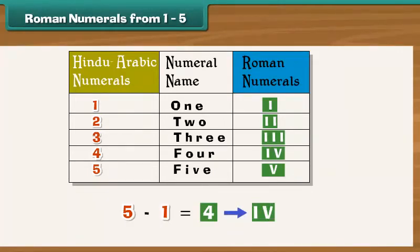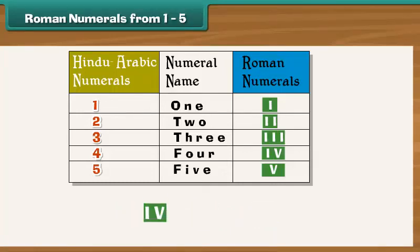It means I minus V, that is 4. Therefore, whenever the Roman numeral I precedes another Roman numeral, it represents a number which is 1 less than the second Roman numeral.